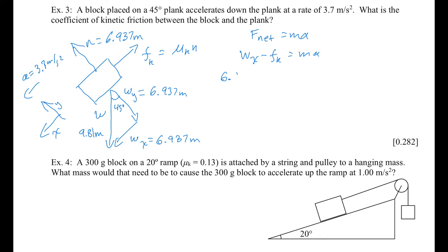w_x is 6.937m. And f_k, we don't know what that is, equals m. We don't know what m is, times 3.7.